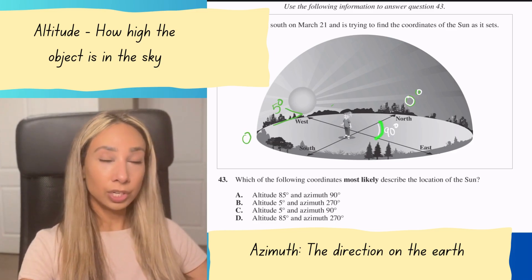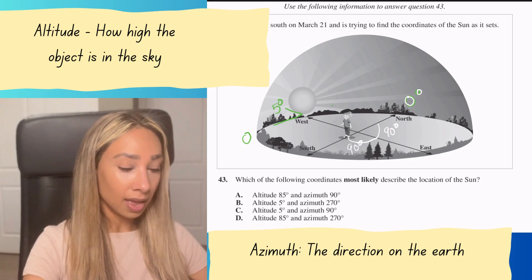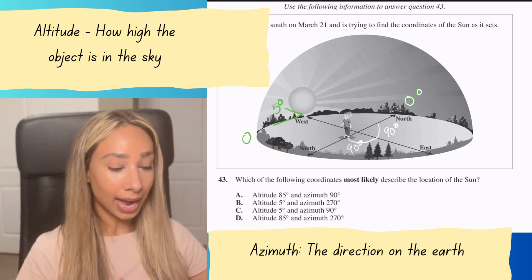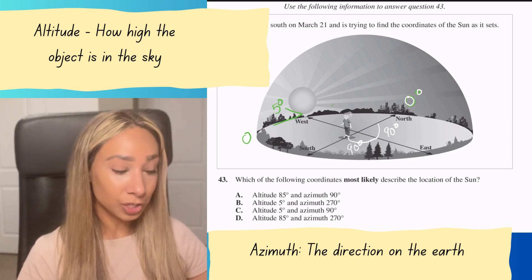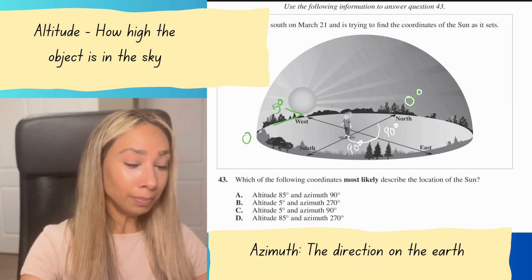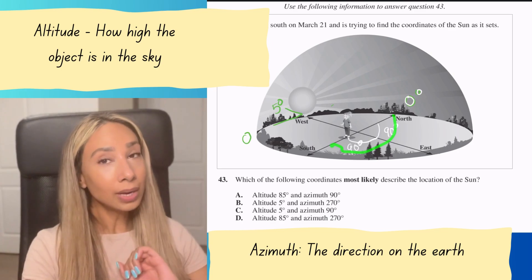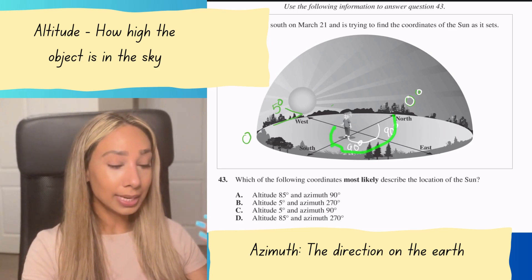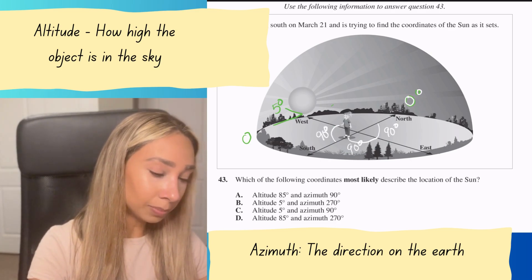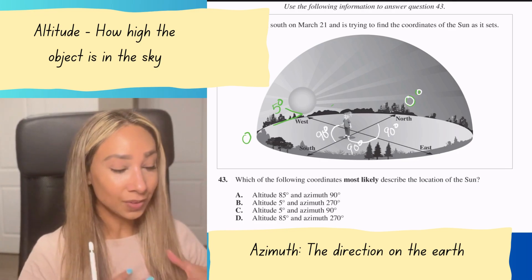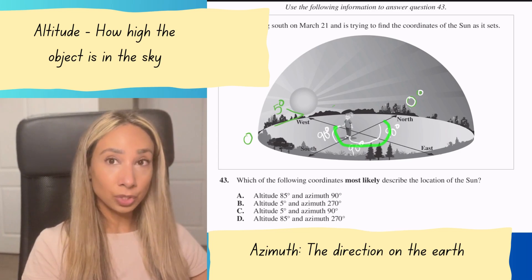Because the Sun is setting, we need to start at north and rotate around till we get to west. Here's our 90 degrees to go to east. We have another 90 degrees to where she's facing. Remember, it's asking about the location of the Sun, not Sally. To get from north to south where she's facing is 180, but we still have to add another 90 to get to the Sun.